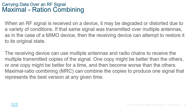Maximum Ratio Combining (MRC) addresses signal degradation at the receiver. When a signal is received on a device, it may be degraded or distorted. If the same signal is transmitted over multiple antennas — as with MIMO — the receiving device can attempt to restore the original signal by using multiple antennas and radio chains to receive multiple transmitted copies. One copy may be better than another, and by combining them using maximum ratio combining, the device produces one signal that represents the best version available at any given time.